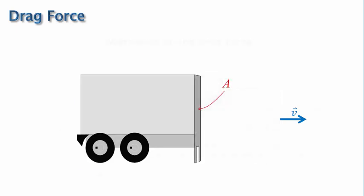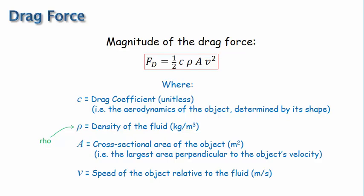Okay, let's go back to the equation. The last variable in the equation is the speed of the object relative to the fluid in meters per second.